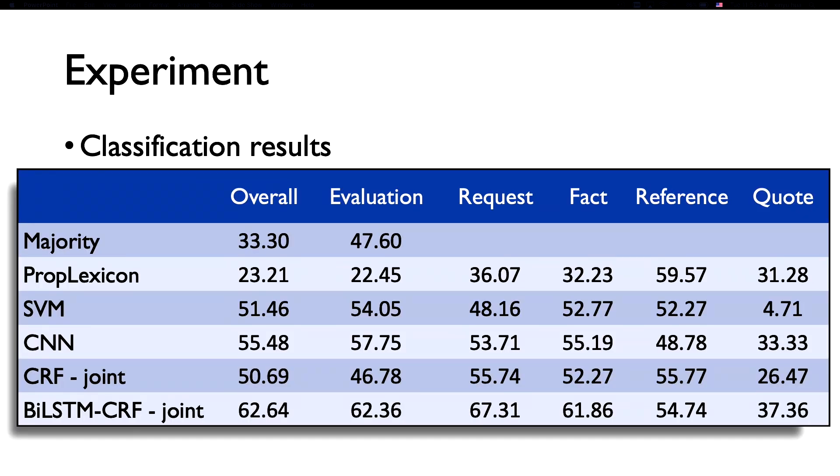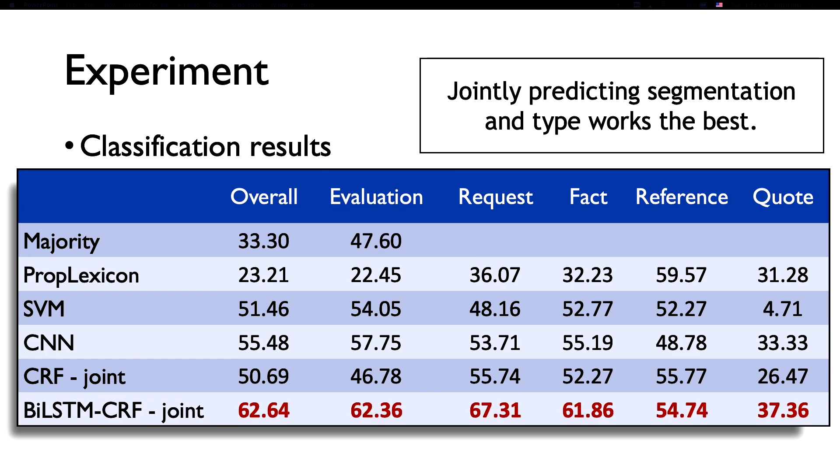For classification, we consider two baselines. The first is we always predict the majority case in training set, which is evaluation. In the second case, we handcraft a set of lexicons for each type and use pattern matching as rules. Here we see the learning-based methods all outperform all those baselines. Also, we highlight that the best model is achieved by the neural network-based model, which jointly predicts the segmentation and the classification.